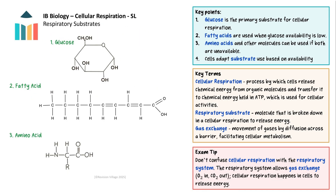The primary substrate for respiration is the monosaccharide glucose, as it is the molecule most readily metabolised by cells. When glucose levels in the blood are low, fatty acids can also serve as a significant substrate for respiration, particularly in tissues like muscle and liver. If both glucose and fatty acids are unavailable, cells can utilise other biological molecules as substrates, including amino acids derived from protein breakdown or other metabolic intermediates, ensuring that energy production can continue under various conditions.